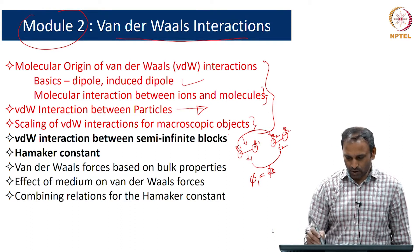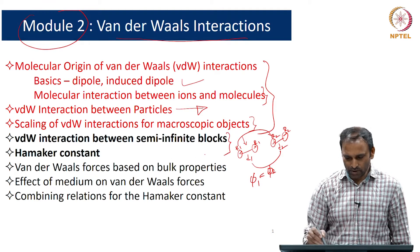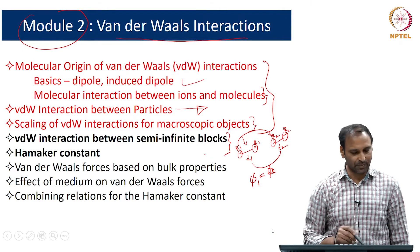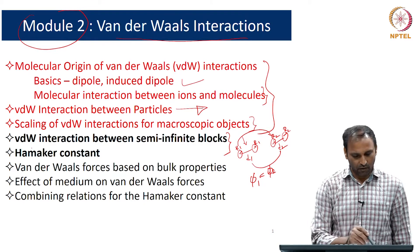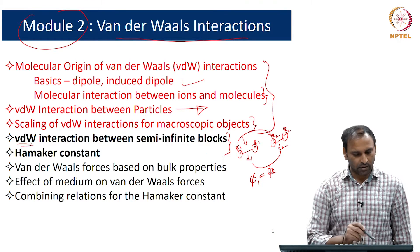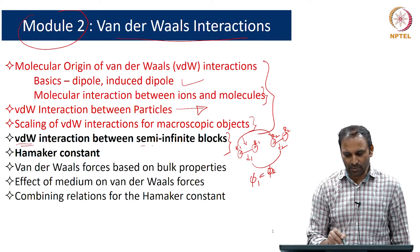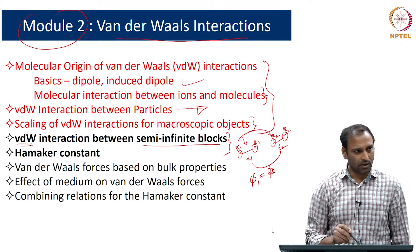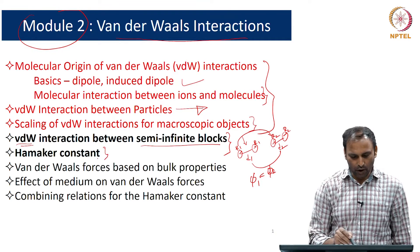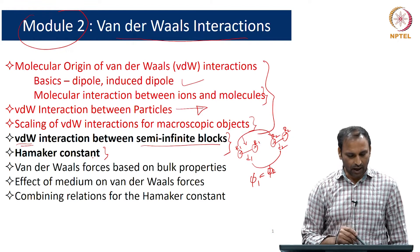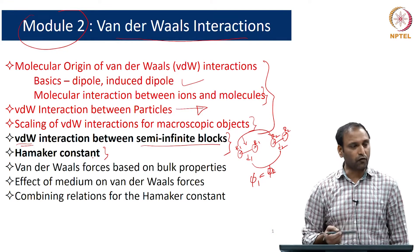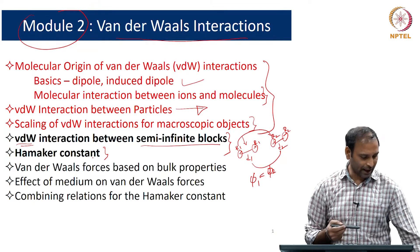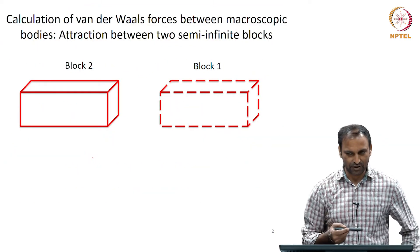Today we will do two things: first, we will derive an expression for Van der Waals interaction between semi-infinite blocks, and then we will introduce what is called the Hamaker constant, which is useful if you really want to quantitatively calculate the Van der Waals force of interaction.